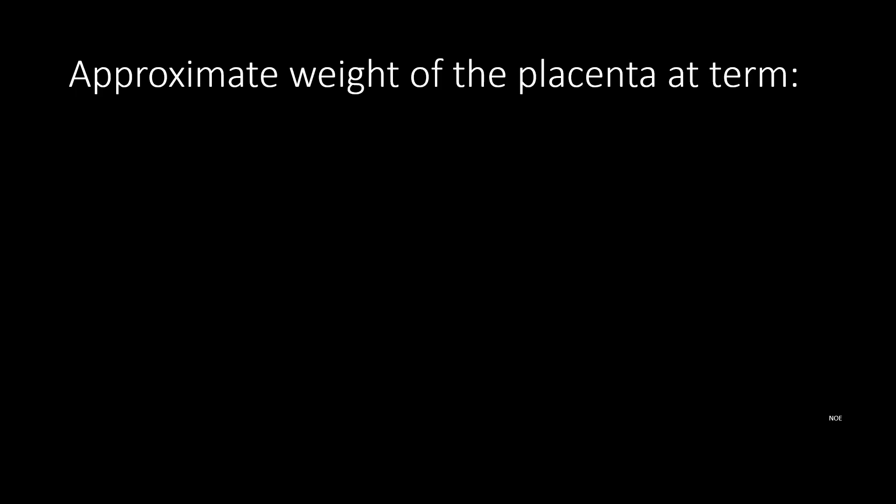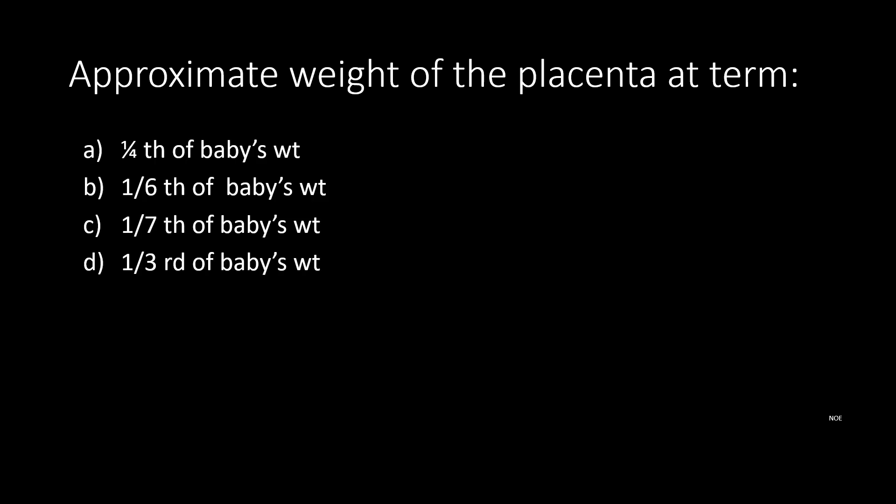Approximate weight of the placenta at term: option A 1/4th of baby's weight, option B 1/6th of baby's weight, option C 1/7th of baby's weight, option D 1/7th of baby's weight.